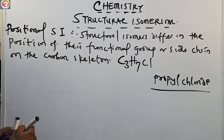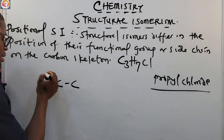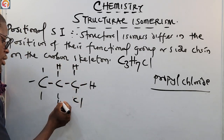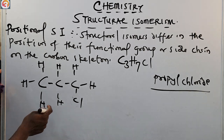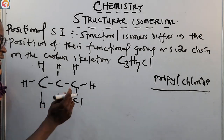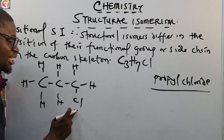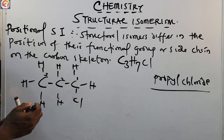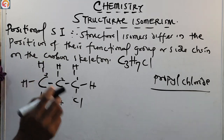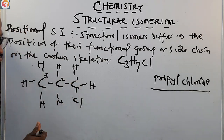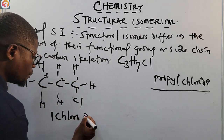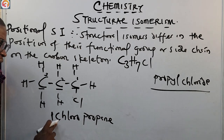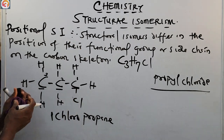Using chloropropane as an example: we can have 1-chloropropane, where the chloride atom is on the first carbon atom of a three-carbon chain. We name it from the end giving the shortest numbering — the side chain is on carbon one, so it is 1-chloropropane.